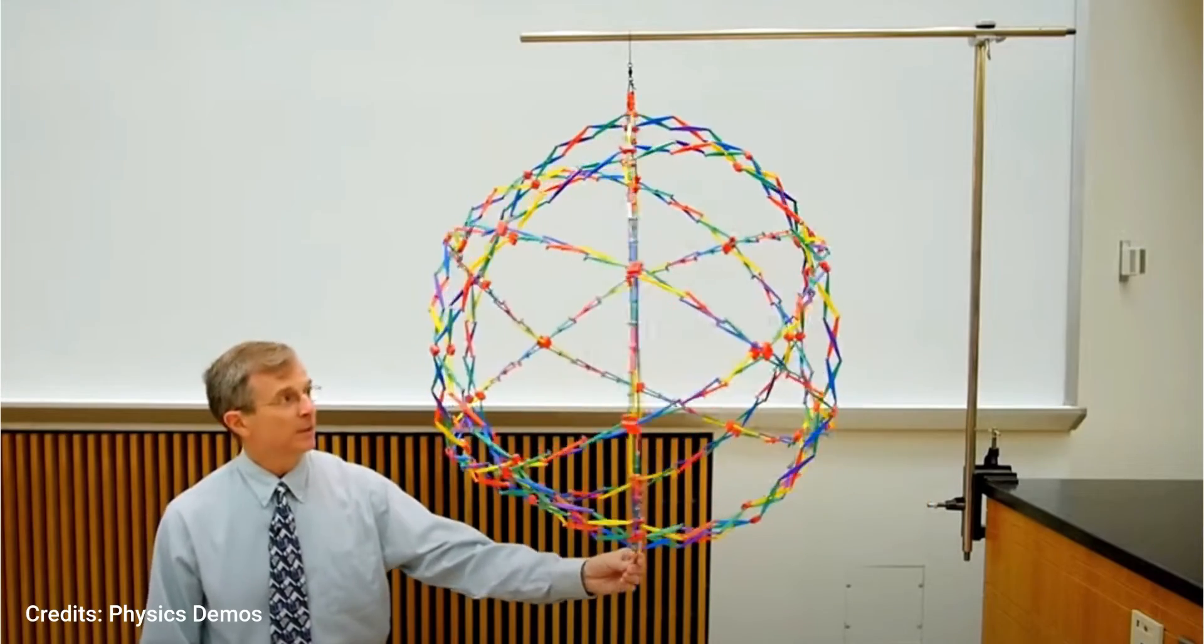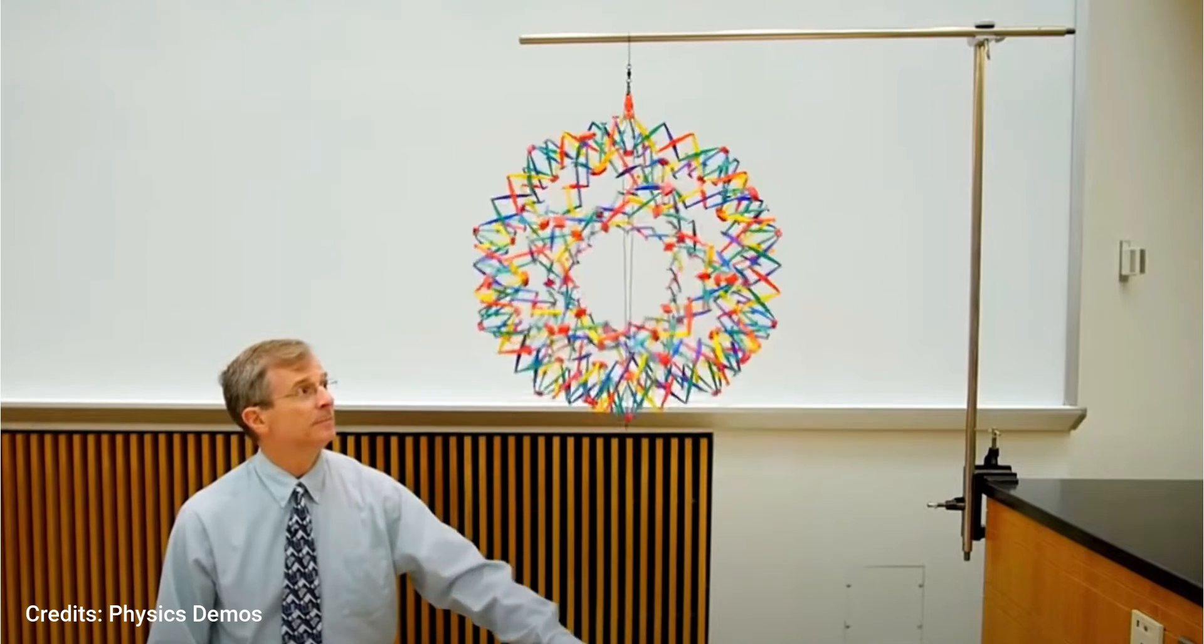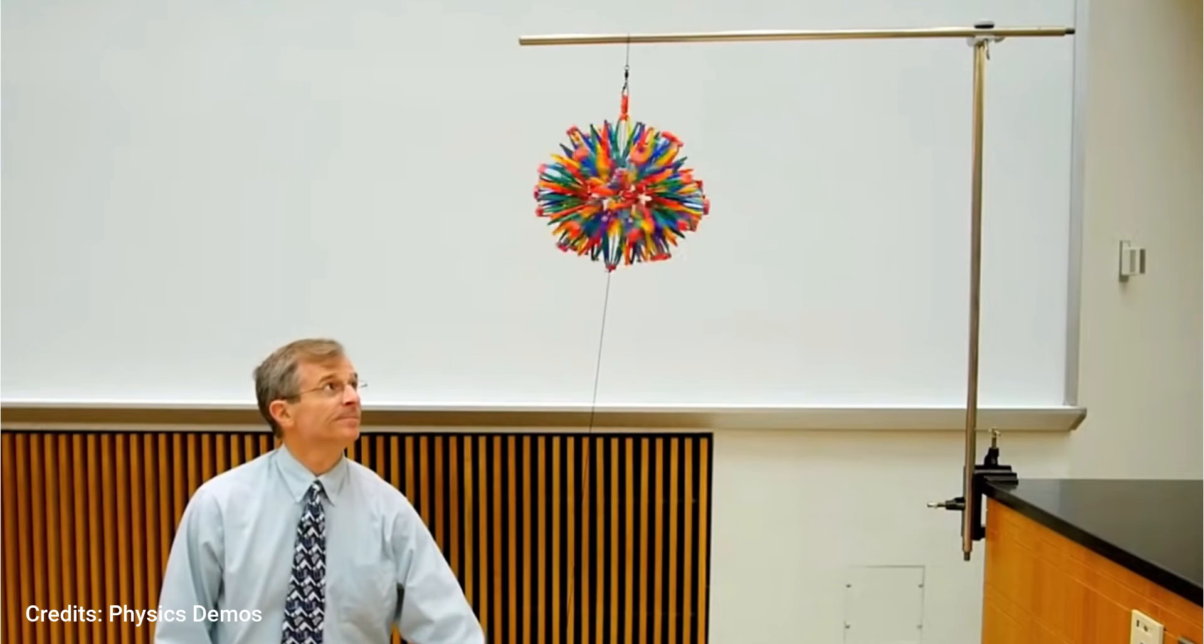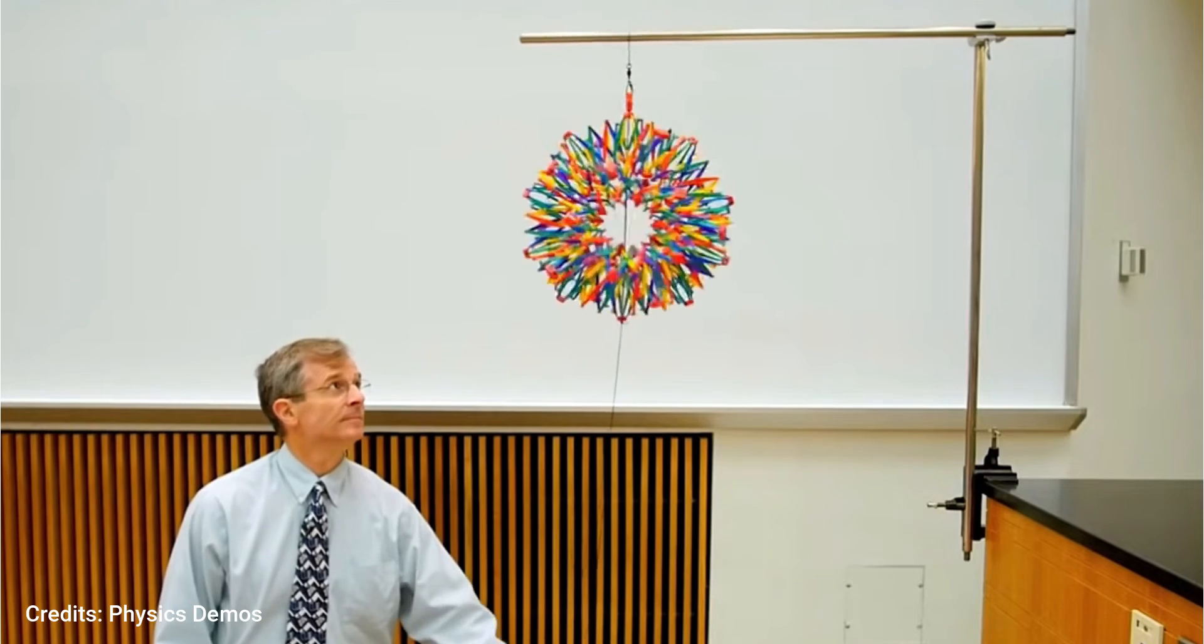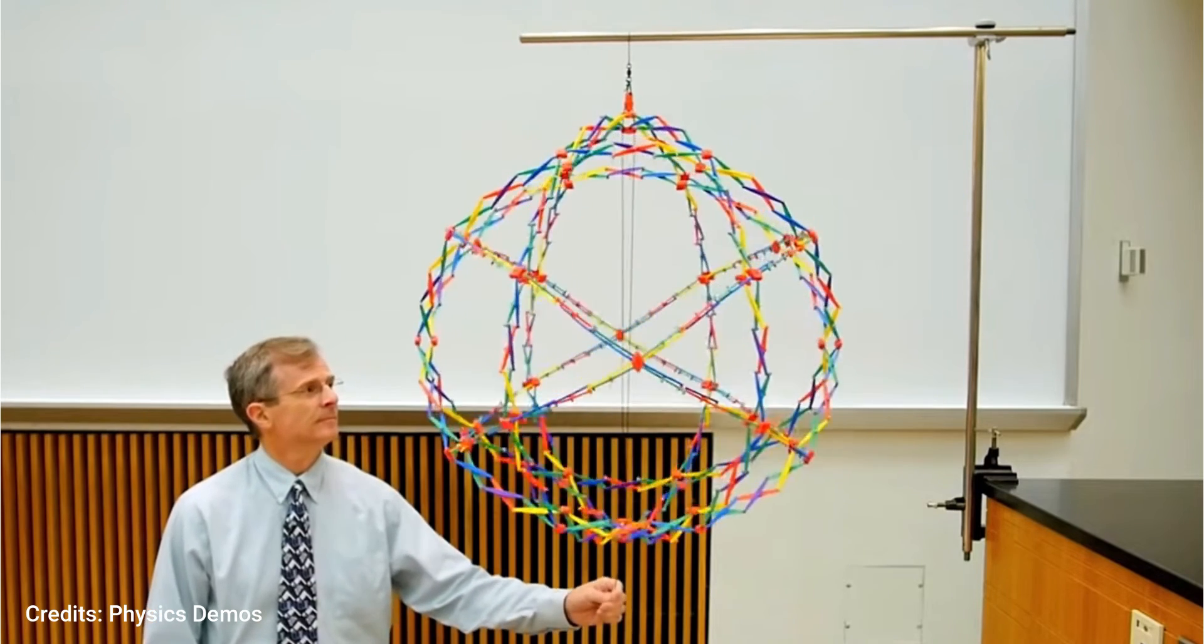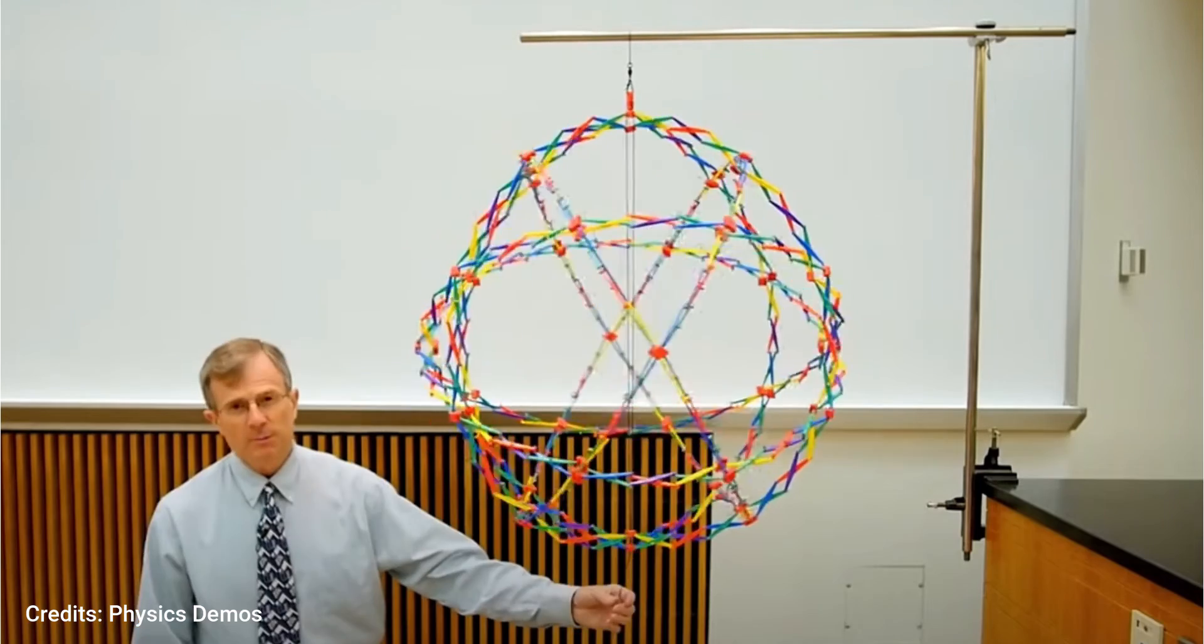Another cool classroom demonstration of the moment of inertia is that of a contractible cage as shown. Again, reduction of the moment of inertia by collapsing the cage causes it to rotate faster so as to conserve the angular momentum.